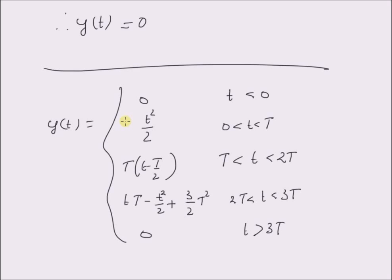We can clearly see that the output changes for different intervals. In this video, we learned how to evaluate the convolution integral that changes for different intervals. The key point is to determine the integration limits for each interval. Thanks for watching.